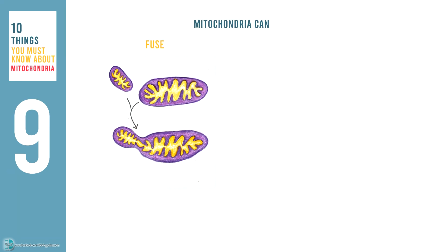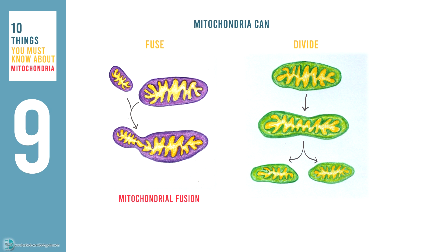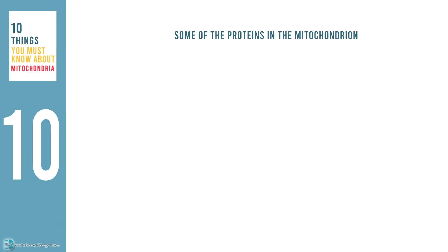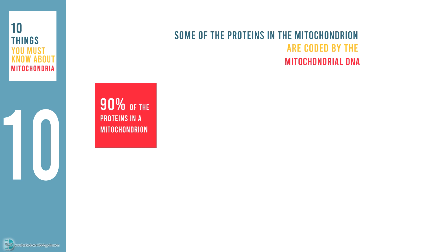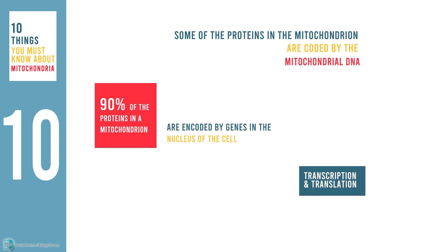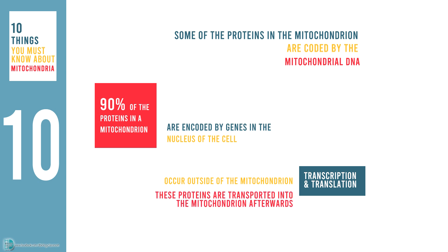Mitochondria can fuse and divide, known as mitochondria fusion and fission. This explains why the sizes of mitochondria in a cell vary. Although some of the proteins in the mitochondrion are coded by the mitochondrial DNA, more than 90% of the proteins are encoded by genes in the nucleus. Transcription and translation occur outside of the mitochondrion, and these proteins are transported into the mitochondrion afterwards.